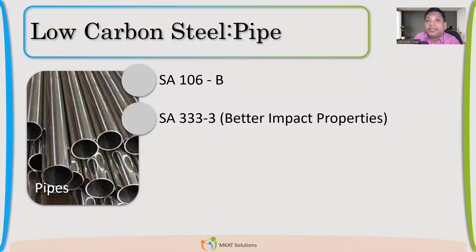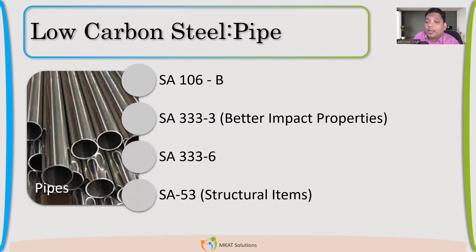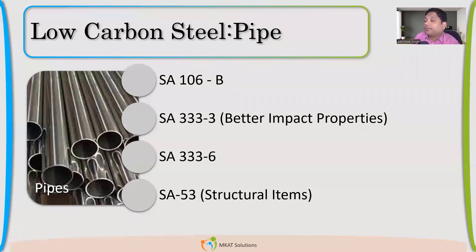For nozzles we always prefer SA106 Grade B. If we need better impact properties for low temperatures, we go for SA333 — also a pipe material, good for low temperature. SA53 is for structural use, like making legs, and is available at lesser cost. SA53 cannot be used for nozzles or pressure parts — for pressure parts we use SA106 Grade B.